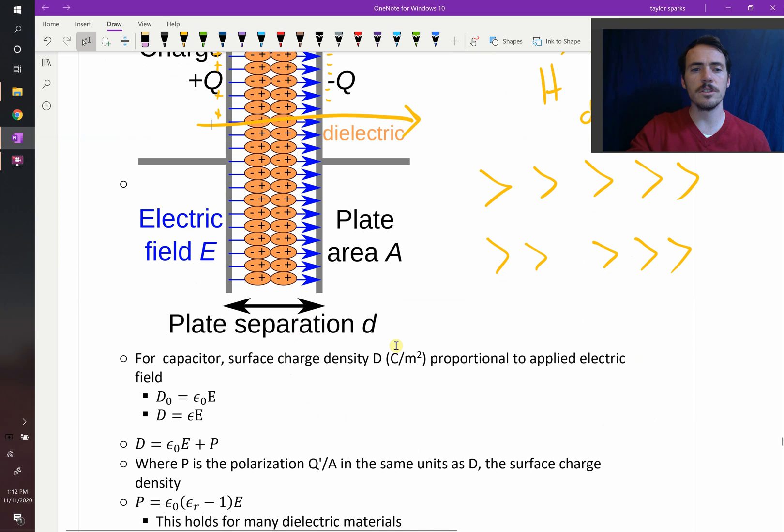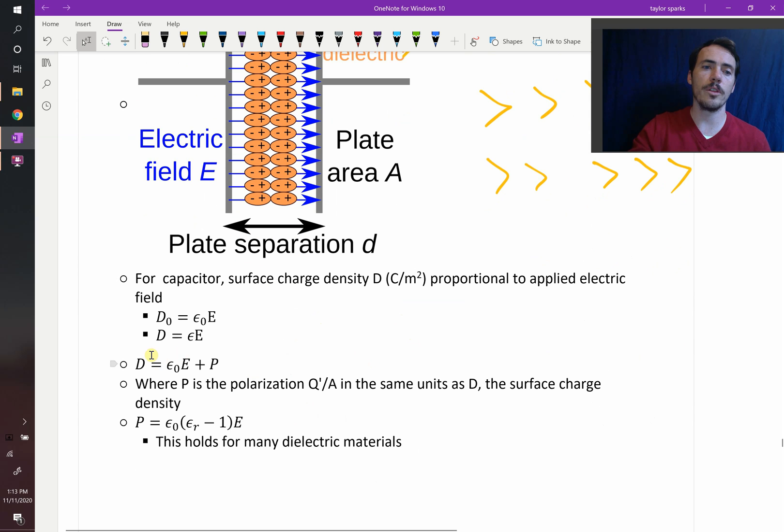So what this allows us to do, if we come down here, we can calculate the surface charge density, D. So that's Coulombs per meter squared, not capacitance. That's Coulombs per meter squared. And that's going to be proportional to our applied electric field. So D, our surface charge density, will be equal to the dielectric constant multiplied by whatever our electric field was. And then we know that D is also equal to the permittivity of free space times the electrical field plus our polarization, where the polarization is of your dielectric material.